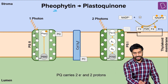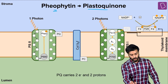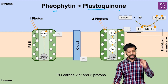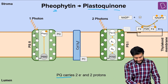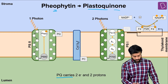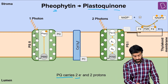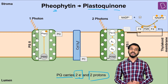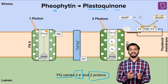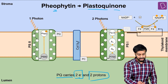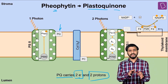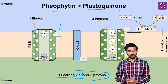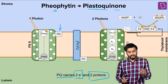From pheophytin, the electron is transferred to plastoquinone, abbreviated as PQ. An important property of plastoquinone is that it carries two electrons and two protons. The process performed by PQ will not happen if it has only one electron, because it requires two electrons and two protons.